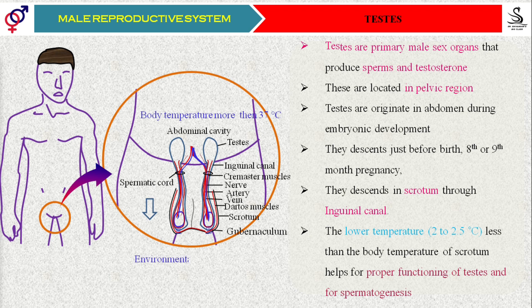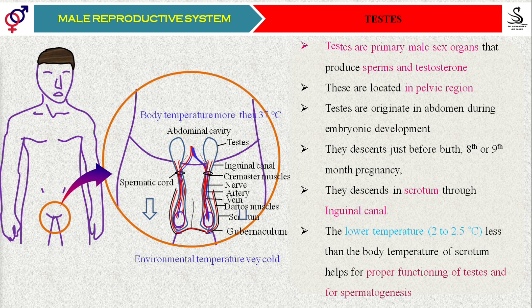Suppose whenever the environmental temperature becomes too cold — as you see in winter season — environmental temperature becomes too low. Will that affect spermatogenesis? 100% yes. Because of that, by that time the cremaster muscles and dartos muscles are going to slowly contract and help in keeping the testes very near to the abdominal cavity. Because of that, whatever the required temperature is there, it will again be available for the testes and spermatogenesis will normally take place.